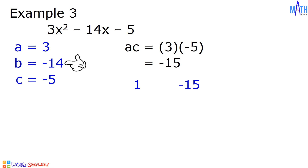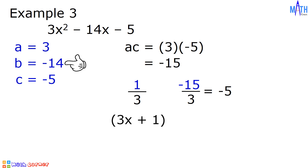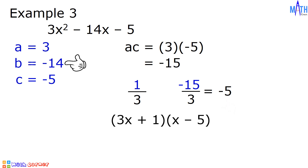Next step, let us divide 1 and negative 15 by the value of a. We have 1 divided by 3, and negative 15 divided by 3. Let us simplify: 1 over 3 is already in lowest terms. For negative 15 over 3, it is equal to negative 5. Let us write the factors: for 1 over 3, we have 3x plus 1 — the denominator is the coefficient of x and the numerator is the constant. For negative 5, we have x minus 5. And these are the factors of 3x squared minus 14x minus 5.